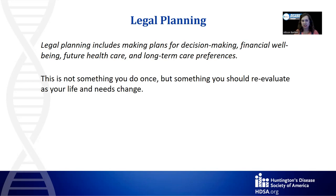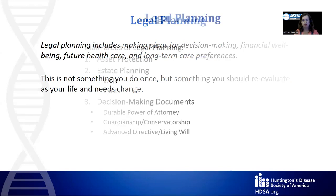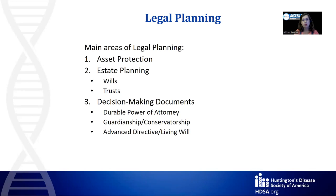There are a lot of holes in the legal system, so the more you prepare in advance, the better. The main areas of legal planning include asset protection, estate planning — which includes wills and trusts — and decision-making documents, which includes durable power of attorney, guardianship and conservatorship, and advanced directive and living will. How to make an advanced directive and living will will be a separate presentation, and a third presentation will cover the differences between durable power of attorney and guardianship and conservatorship.